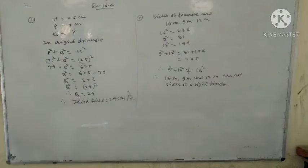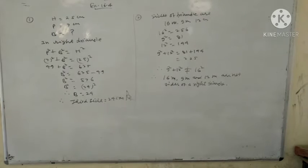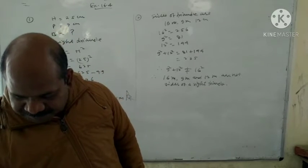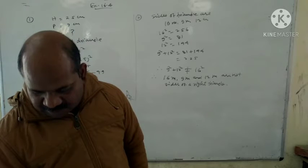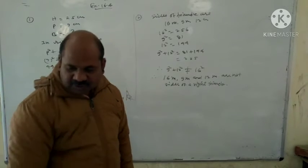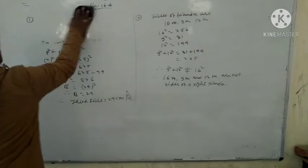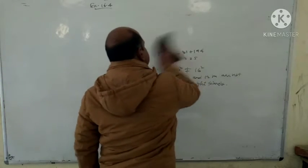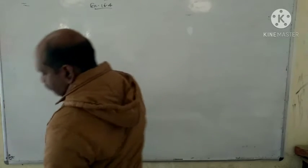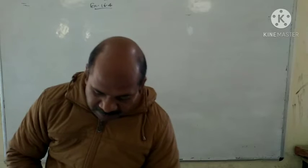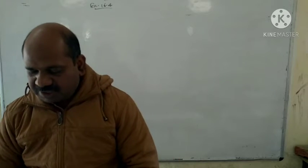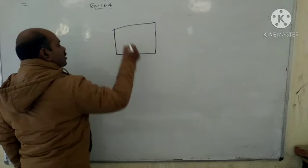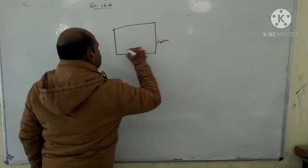Next, question number 3. Find the length of the diagonal of a rectangle whose sides are 16 cm and 12 cm. We have a rectangle with length AB equals 16 centimeter and breadth BC equals 12 centimeter, and we need to find the diagonal AC.